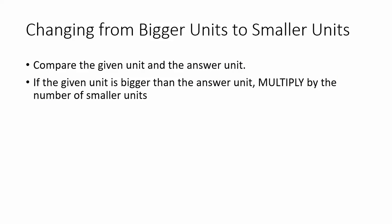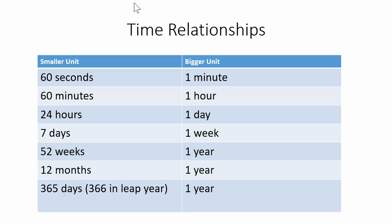Let's look first at how we change from bigger units to smaller units. So we're going to compare the units we're given, as well as the units we're changing to. If the given unit is a bigger measurement, we're going to multiply to get to the smaller units. Let's look at what that means. What I'm talking about is that this column is bigger than its pair on the left. So one minute is bigger than 60 seconds. A week is bigger than a day.